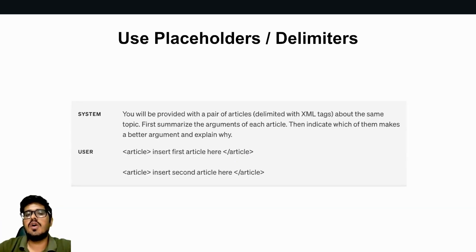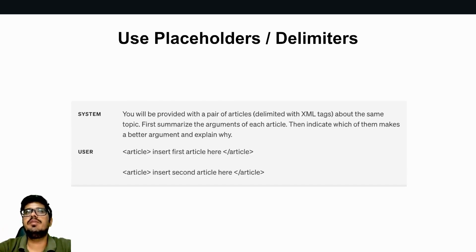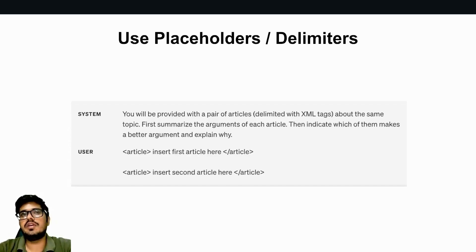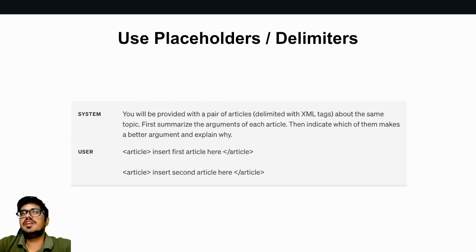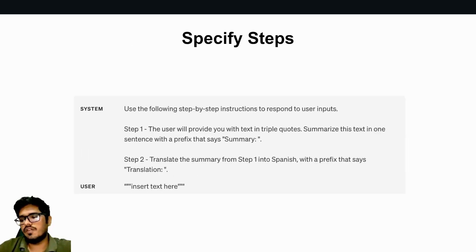Third tactic is using placeholders or delimiters. You tell ChatGPT to insert article one above and article two below. Maybe you're writing a blog with a specific format to follow — leave this area for images, write heading two here — and you can do this using delimiters. If you're writing an HTML format for a blog, you can leverage HTML tags. If using Markdown, you can use elements like paragraph tags or image tags and so on.